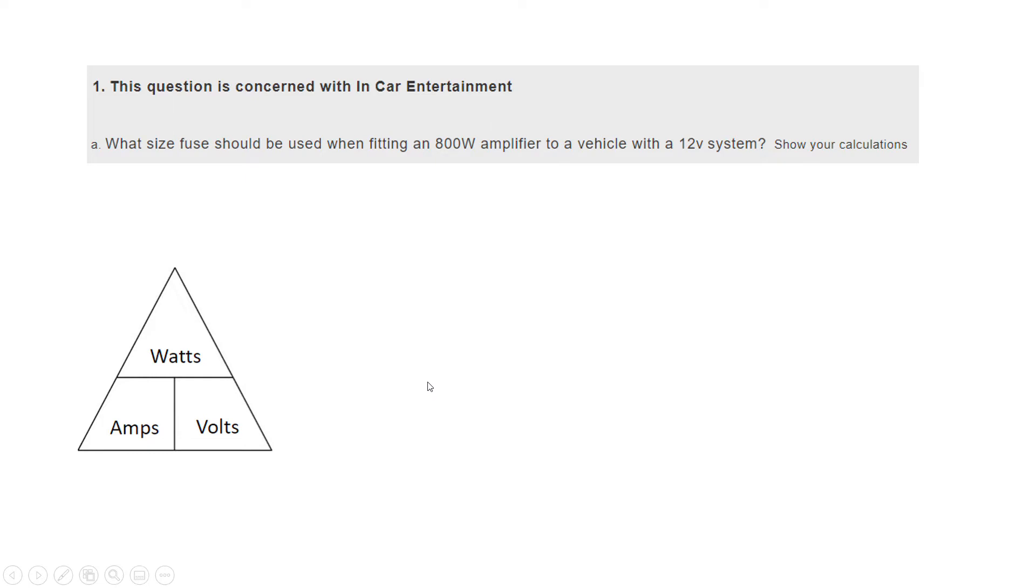We've got some information up here, we know that we've got an 800 watt amplifier and a 12 volt system. So I'm going to clear the contents of my triangle and slot in the information that we have. We know that we have 800 watts and we also know that we have a 12 volt system.